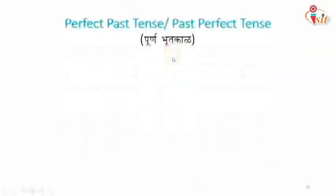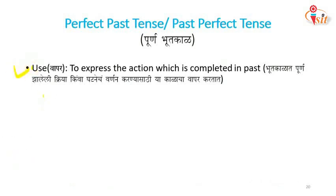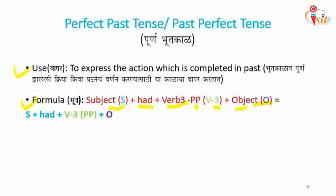Let's look at past perfect tense. The use is to express the action which is completed in the past. The formula is: subject plus 'had' plus verb three — that is the past participle — plus object. In short: S + had + V3 + O.